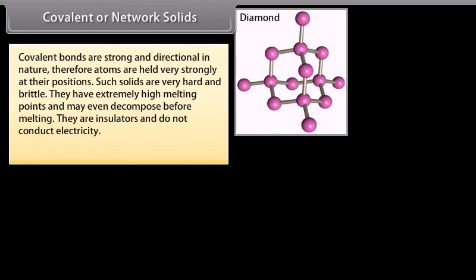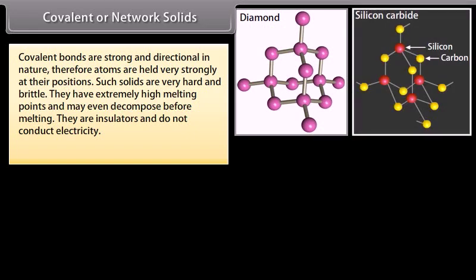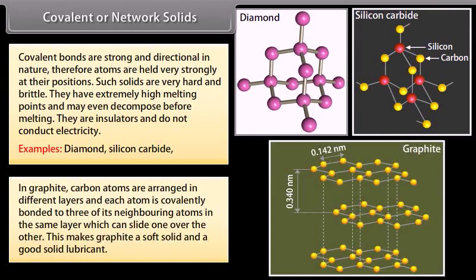Covalent bonds are strong and directional in nature. Therefore atoms are held very strongly at their positions. Such solids are very hard and brittle. They have extremely high melting points and may even decompose before melting. They are insulators and do not conduct electricity. Examples: Diamond, Silicon Carbide. In graphite, carbon atoms are arranged in different layers and each atom is covalently bonded to three of its neighboring atoms in the same layer which can slide one over the other. This makes graphite a soft solid and a good solid lubricant.